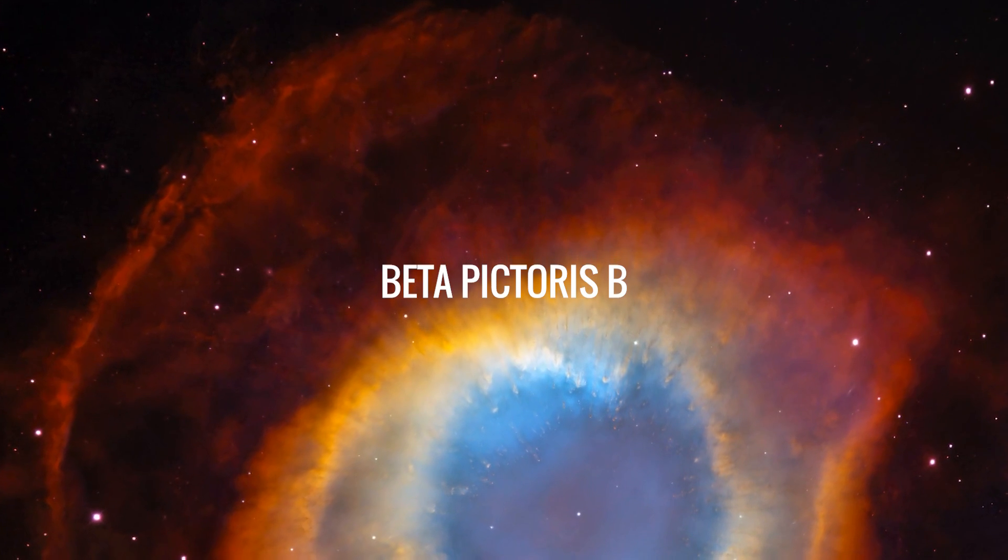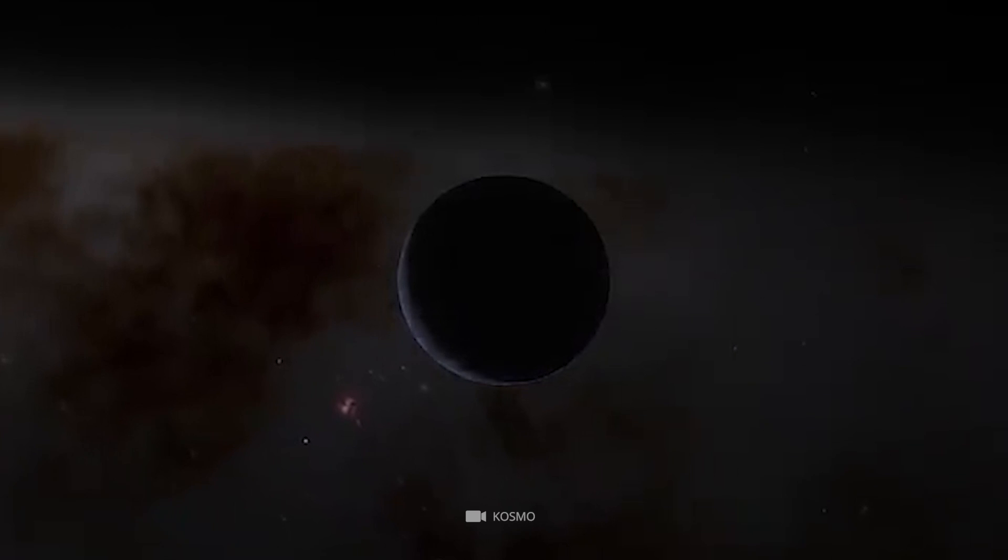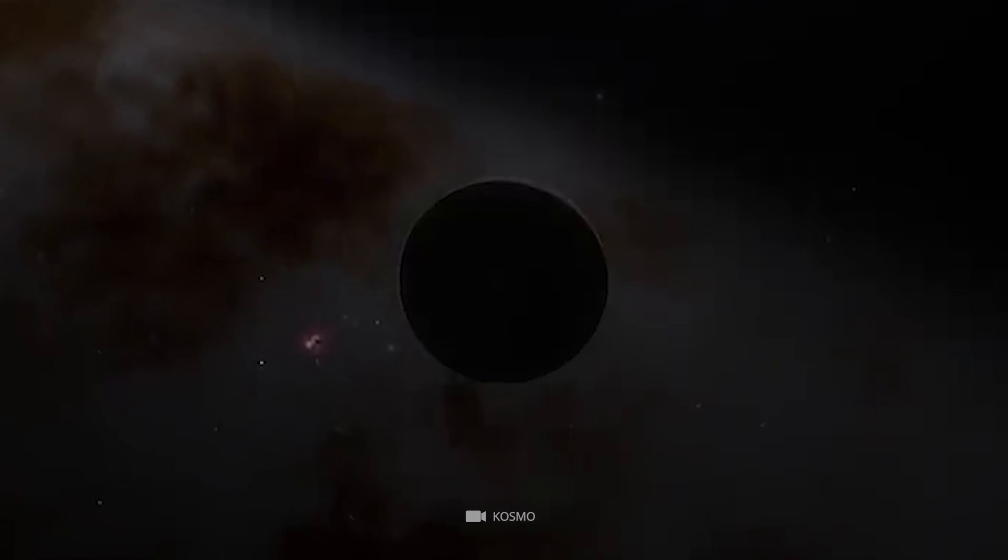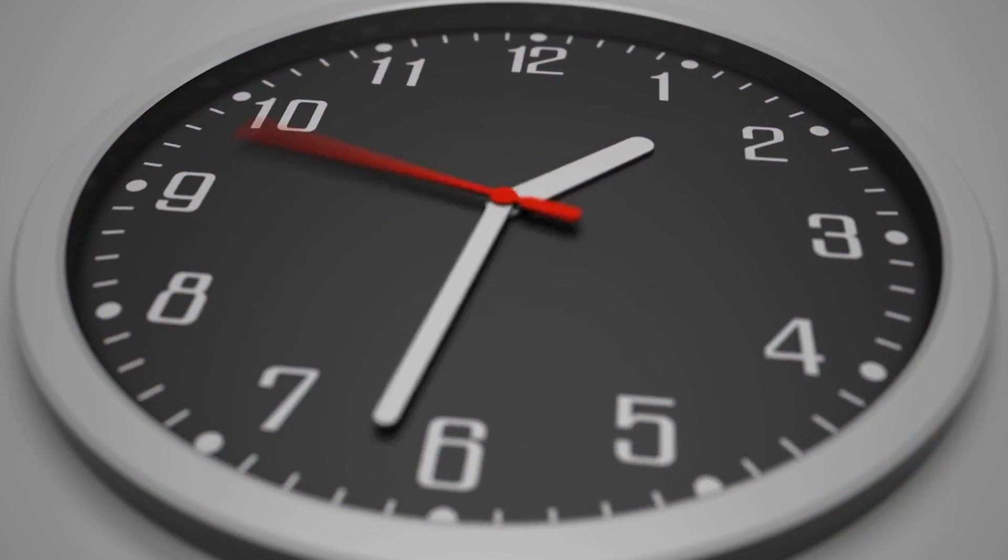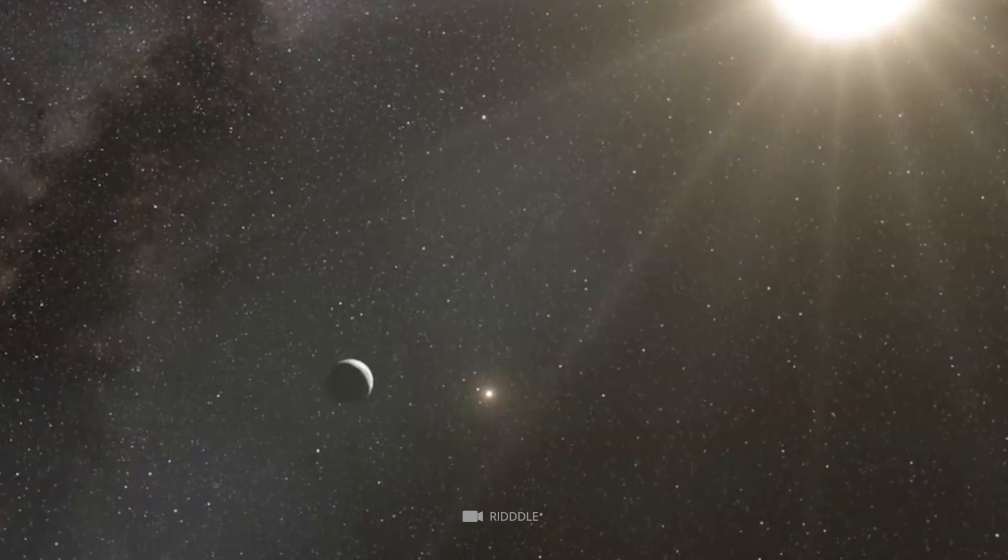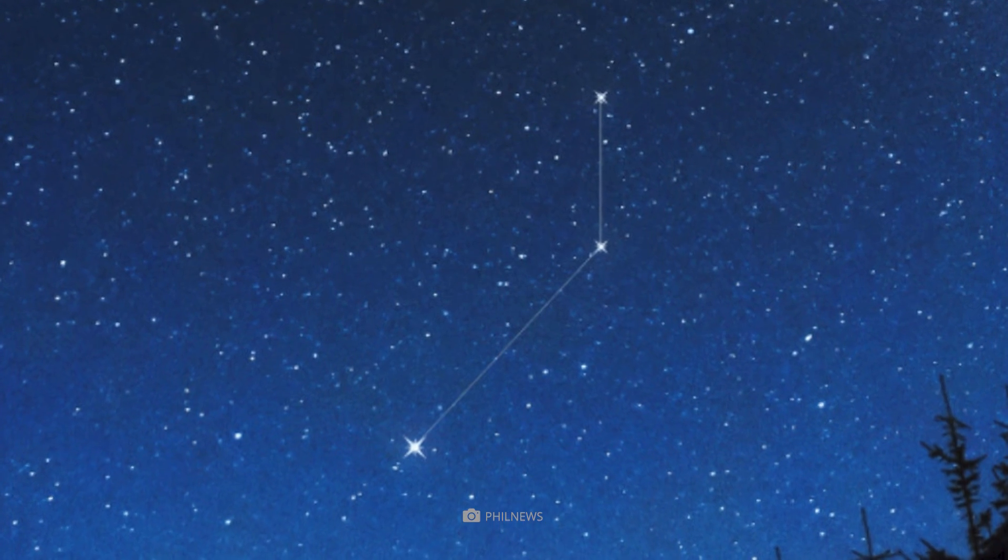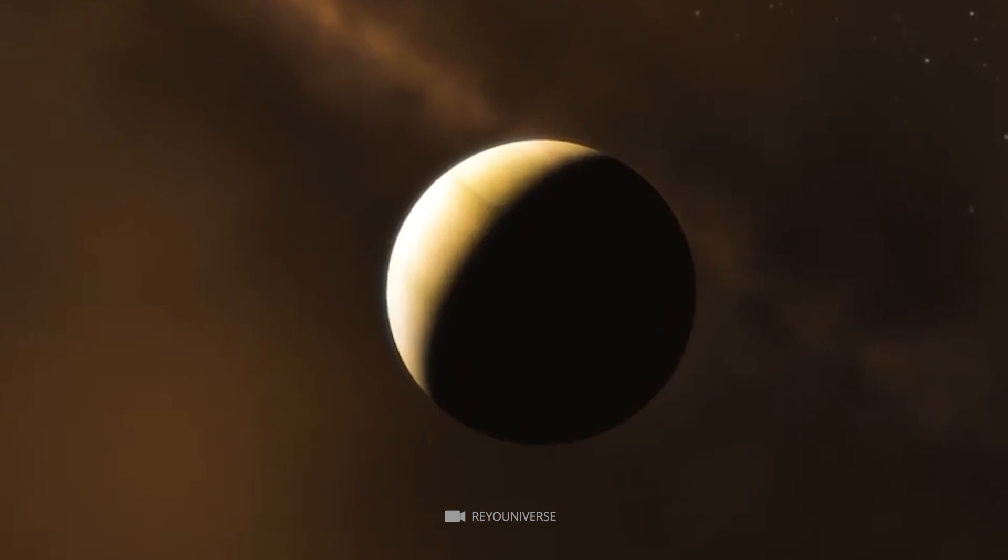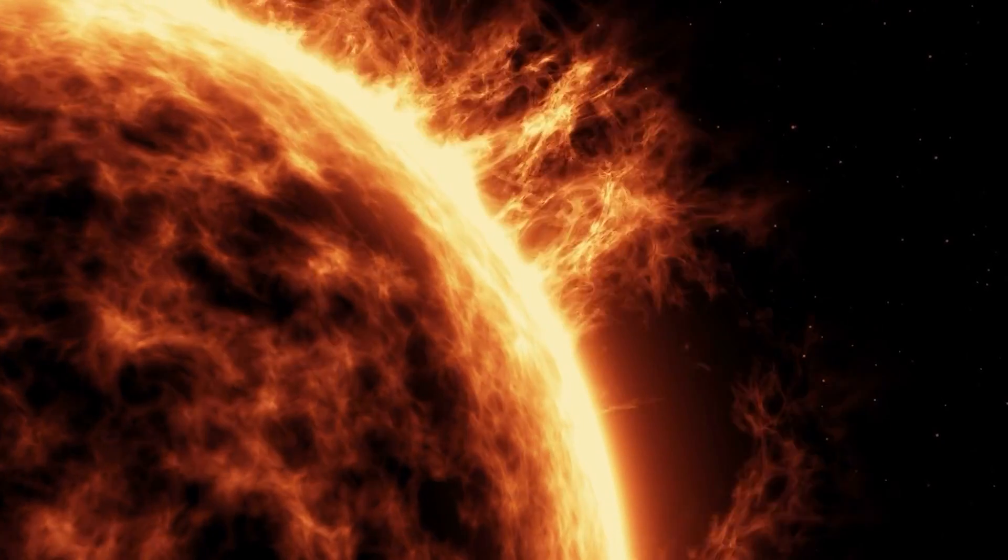BETA PICTORUS B is one of the largest exoplanets in our universe, with a mass estimated to be around 13 Jupiter masses and a radius nearly 46% larger than Jupiter. It was discovered on November 18, 2008, by astronomer Anne-Marie Lagrange and orbited the BETA PICTORUS star located approximately 63 light-years away from Earth in the constellation Pictor. Its orbital period is around 22 years, with an average temperature of 1724 Kelvin.